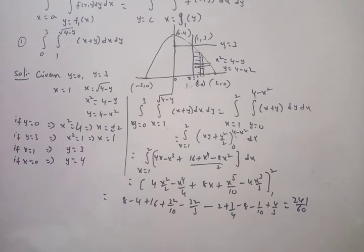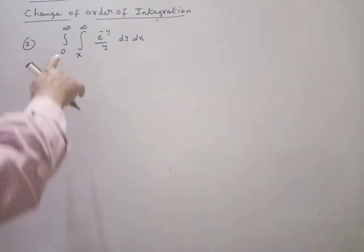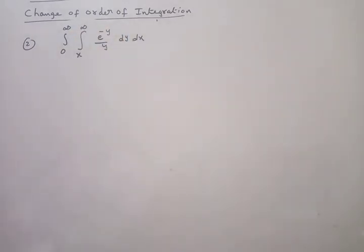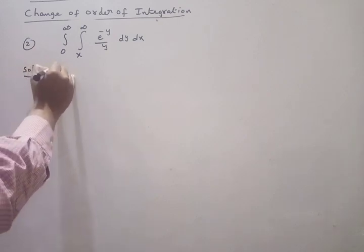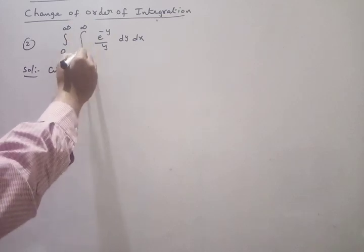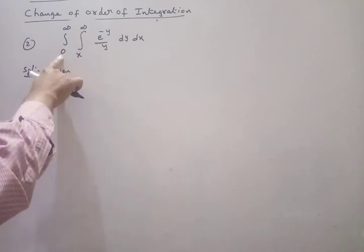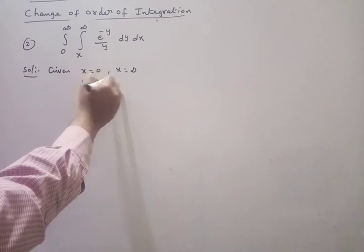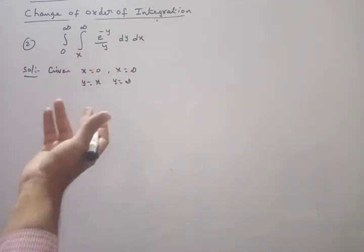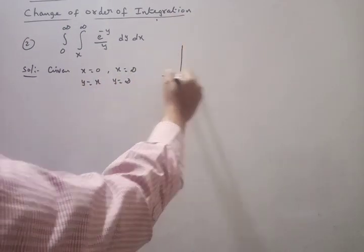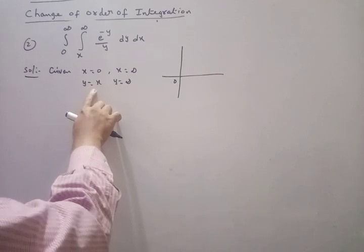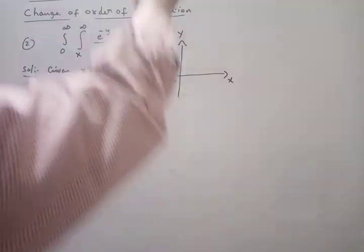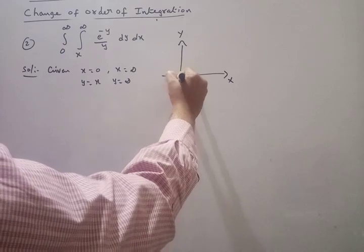We will see another problem: evaluate the integral from 0 to ∞ and from X to ∞ of e^(−Y)/Y dY dX. Given: X varies from 0 to ∞, and Y varies from X to ∞. Plot these points - the origin, X = 0, X = ∞ on the X-axis, Y = ∞ on the Y-axis, and Y = X is a straight line passing through the origin.